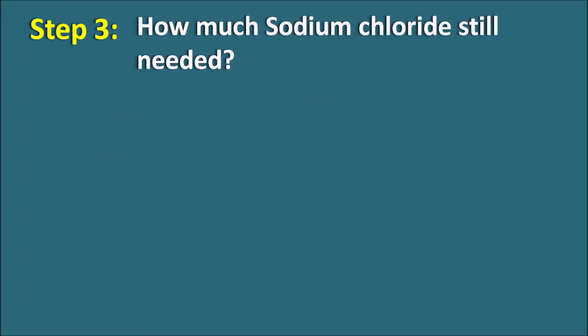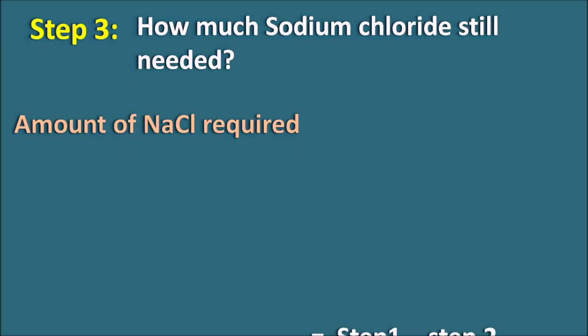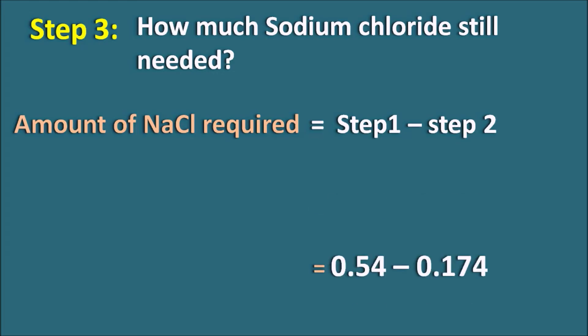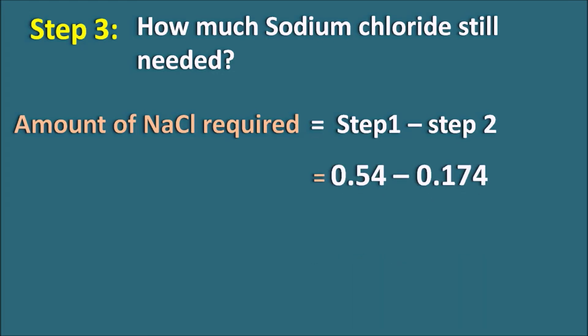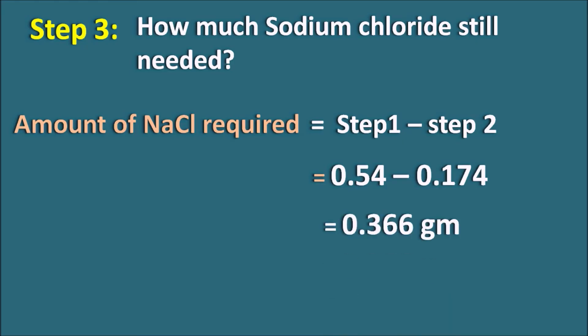Step 3 — how much Sodium Chloride is still needed? The amount required equals Step 1 minus Step 2: 0.54 − 0.174 = 0.366 grams, or approximately 0.37 grams of Sodium Chloride is required to maintain isotonicity.